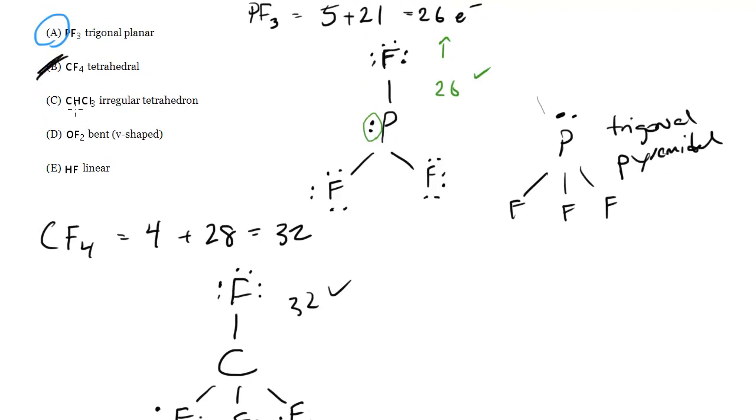CHCl3. Well I'm not going to draw this one because you get the idea. This is going to be the exact same tetrahedral shape as CF4, because it's 4 things bonded to C. But as they say here, it will be irregular because all the substituents are not the same. We've got 1H and 3Cls, so that one is correct.